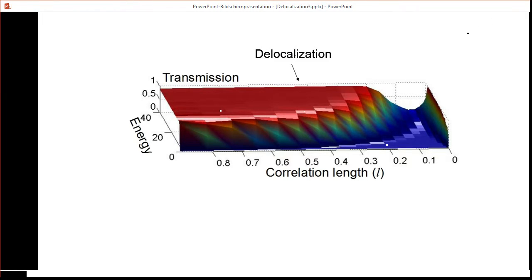We find that in some cases, especially for large correlation lengths, we have a delocalized behavior where the transmission is close to one, or for intermediate correlation lengths we have a localized behavior, while for very small correlation lengths we have a delocalized behavior again.